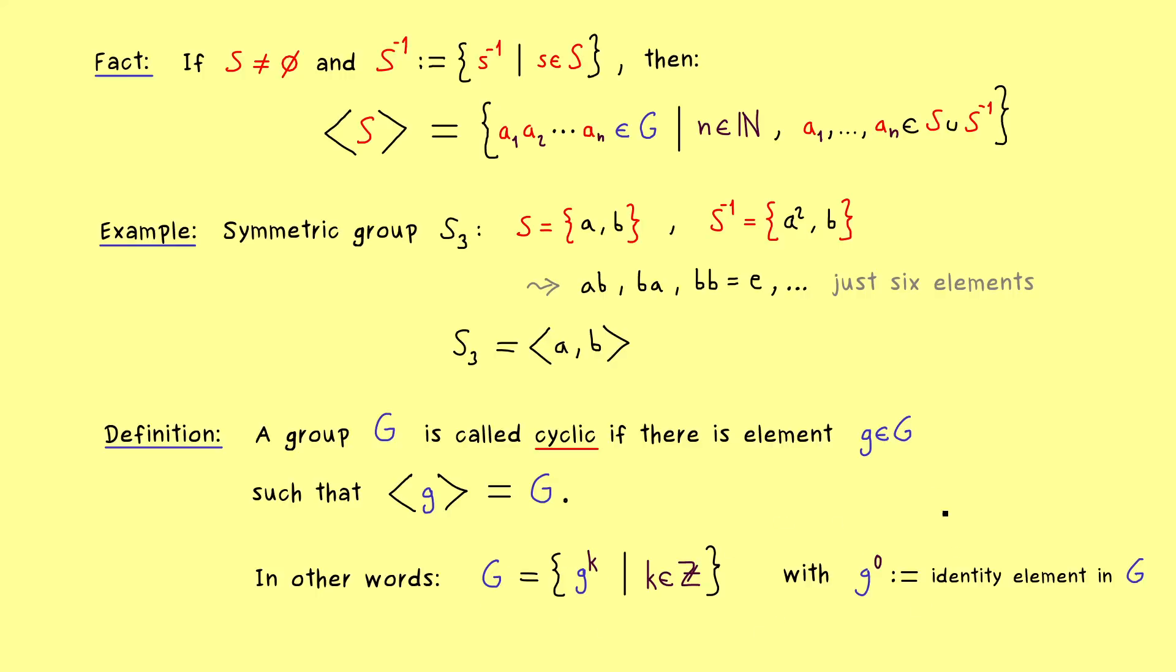Okay, so this is the explicit definition of a cyclic group, but we should definitely look at examples to see how such cyclic groups actually behave.